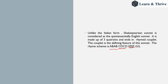Following the three quatrains comes a rhymed couplet, meaning the last two lines rhyme with each other. So the rhyme scheme has three quatrains and a rhymed couplet, giving the full scheme: a b a b c d c d e f e f g g.